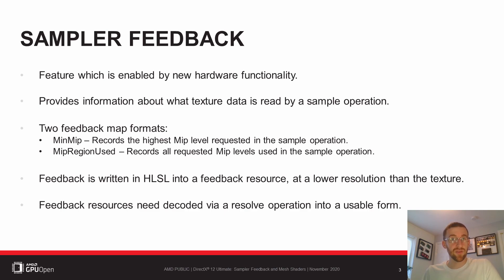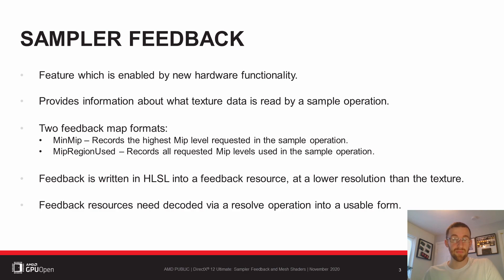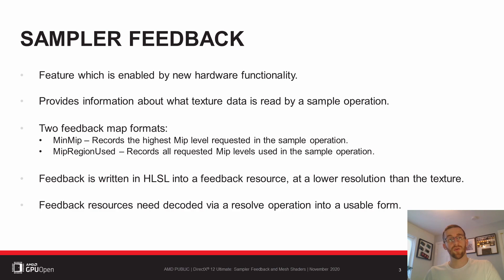Sampler Feedback is enabled by new hardware functionality which allows graphics developers to infer information about what texture data is read by a sample operation. There are two formats of Feedback Map available. MinMip lets you know which is the highest MIP level requested, and MIP Region Used records all requested MIP levels. The resources are stored at a lower resolution than the texture being sampled and works at a user-specified tile granularity. The feedback is written into an opaque feedback resource directly in the HLSL code and requires a decode operation performed on it before it's read for further use.